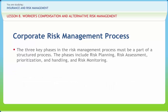The three key phases in the risk management process must be a part of a structured process. The phases include Risk Planning, Risk Assessment, Prioritization and Handling, and Risk Monitoring. The planning process begins with a risk management approach that includes an evaluation of the present or needed level of senior management support, a full assessment of the procedures presently in place to determine the probability that risks are present and the consequences to the organization as a result of worker injuries and illnesses. The assessment identifies losses that can occur related to worker injuries and illnesses and analyzes how likely and how severe those losses may be.